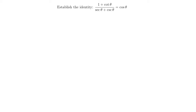I thought I'd go ahead and do one more established identity problem, and this one is a little more challenging because it involves fractions. So here we have 1 plus cotangent theta all divided by secant theta plus cosecant theta. Apparently this is equal to cosine of theta. We definitely want to start with the left-hand side here — it's much more complicated than the right-hand side.